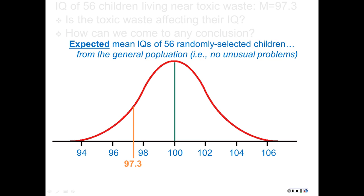So the standard deviation here is only two points — it's very small. With these children, their IQ is 97.3. It's actually a decent chunk below what we would expect 56 children's IQ to be if they were randomly selected from a population where everybody's IQ was distributed normally. So we look at the area right here and we ask ourselves: what's the probability if we sampled 56 people from this population, what is the probability that we would get a mean of 97.3 or lower? We need to know the probability of this or lower, which is the area under this little curve, and that's where distributions come in.